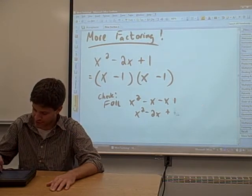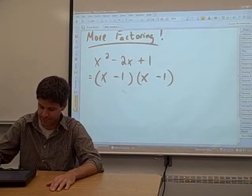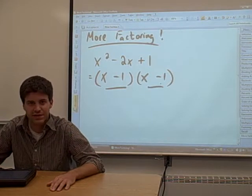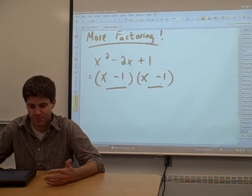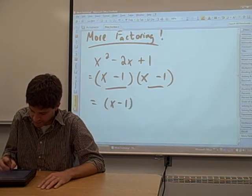But I'm going to erase this. We know that that's the correct factorization, but notice something. You'll notice that this term is the same as that term. Anytime you have two terms that are exactly the same multiplied by each other, you can rewrite it. This is an x minus one squared.